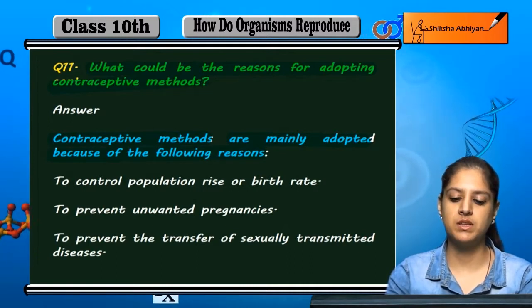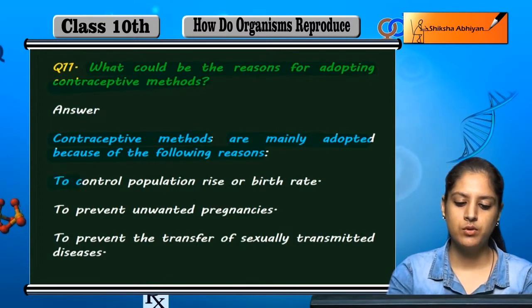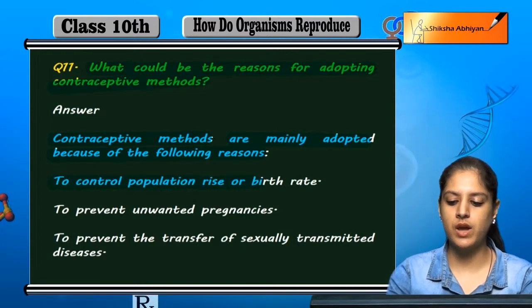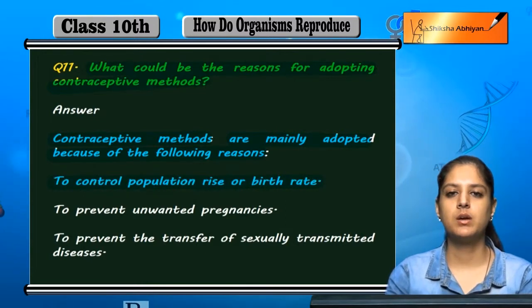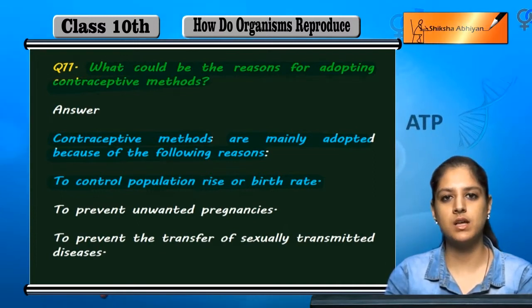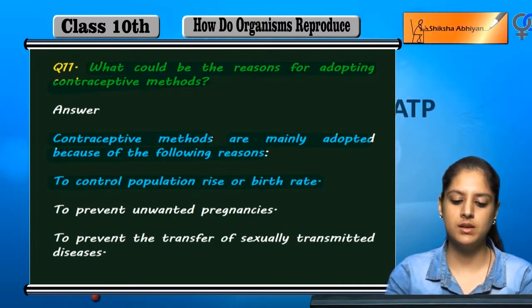Contraceptive methods are used to control population rise and birth rate. If the birth rate or population increases, then contraceptive methods help to control them.